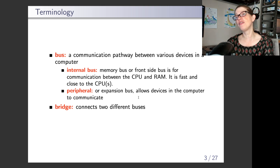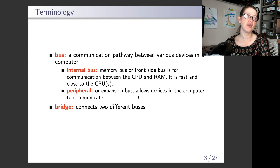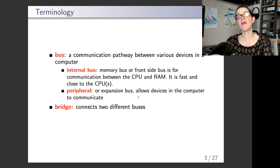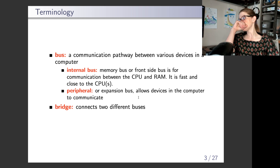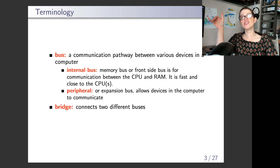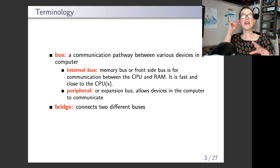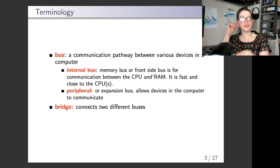If you don't remember CS251 that well, a few terms to keep familiar: a bus is not the yellow thing you went to school on. In some ways it's similar though — a bus in a computer is essentially a communication path which permits devices to talk to each other. When you put data onto a bus, every device attached to that bus will receive that data. The internal bus, or memory bus, or front side bus, is the most important one — it's the communication path between the CPU and RAM.